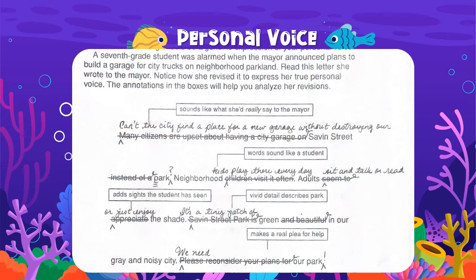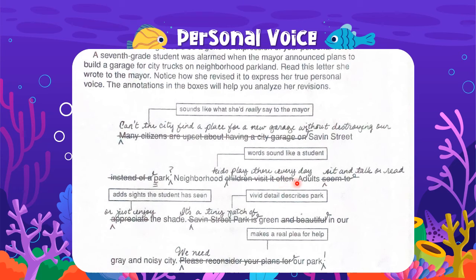Next sentence: 'Neighborhood children visit it often.' The words right now are very formal and not really in the style that a student would say it. So a student would say something more like, 'neighborhood kids play there every day.' A student would use the word 'kids' more than 'children,' and they don't just visit it — they're playing there. And a student really wouldn't use the word 'often' — you would say 'every day.'